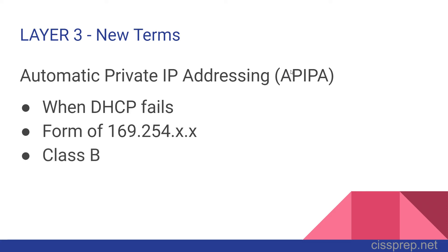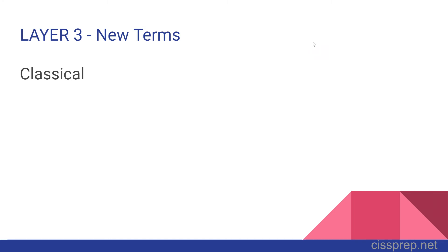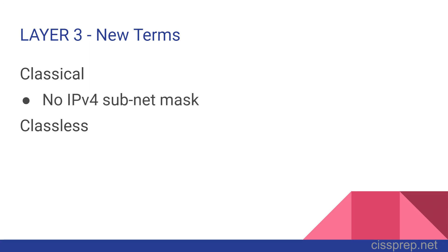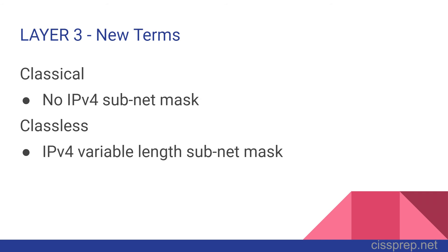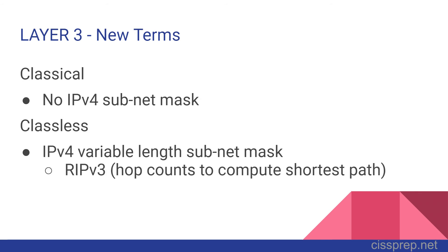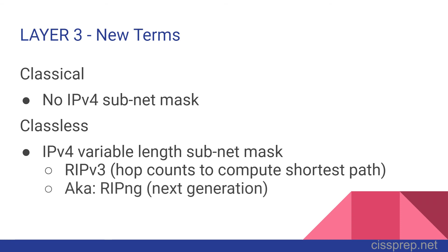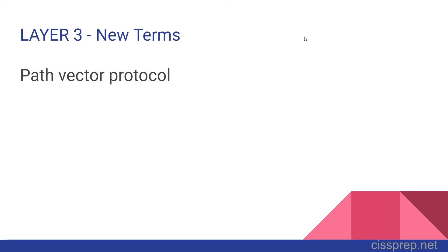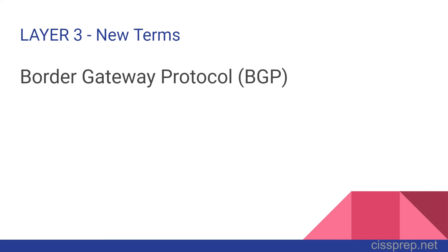Classical routing protocols don't make use of subnet masks in IPv4 addressing. Classless routing protocols do make use of IPv4 subnet masks and can also use variable length subnet masks. An example is RIP version 3, which uses hop counts to compute the shortest route between endpoint routers, also known as RIPNG or RIP Next Generation. A path vector protocol maintains path information that gets updated dynamically — routers accumulate the cost of a path and validate it's loop-free before advertising known paths to peers. Border Gateway Protocol is used by the internet backbone to advertise networks and relies on proper configuration to advertise routes correctly.